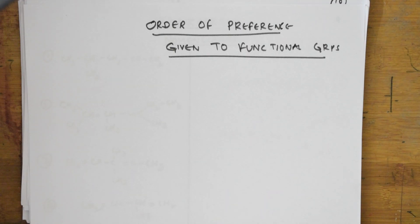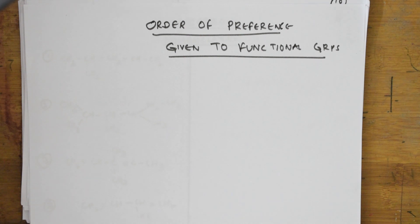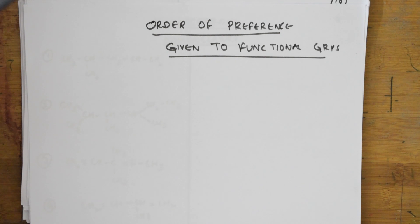Welcome back students. Today in our session we'll be learning about the order of preference given when you have different functional groups — as we have studied in grade 10, grade 11, and grade 12. These include acidic functional groups: carboxylic acid, amines, aldehydes, ketones, cyanides, isocyanides, ethers, alcohols, thiols, and more.